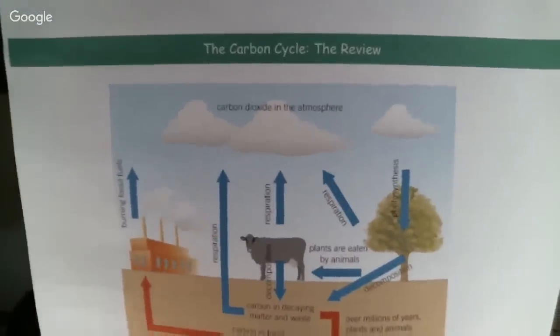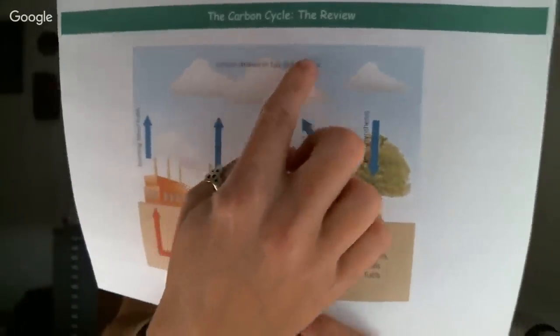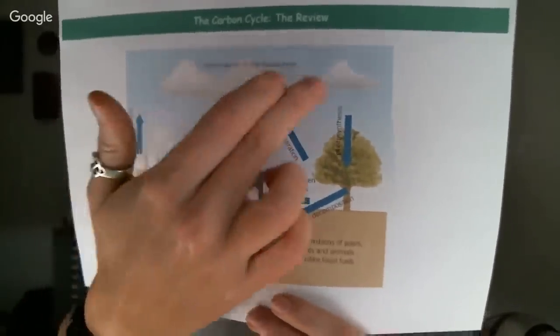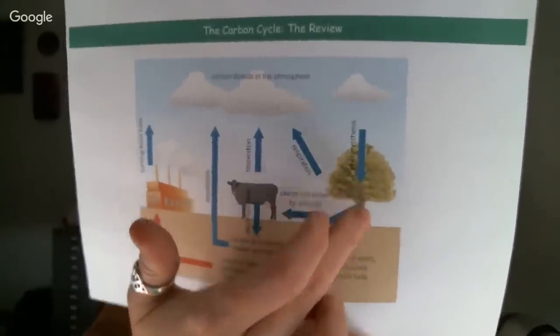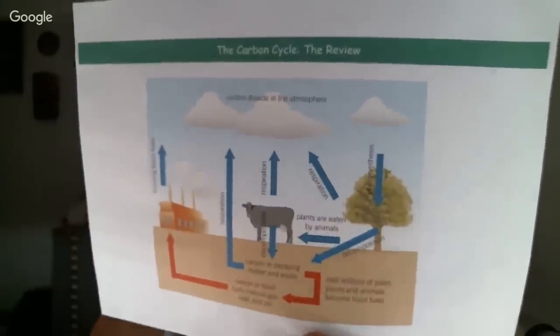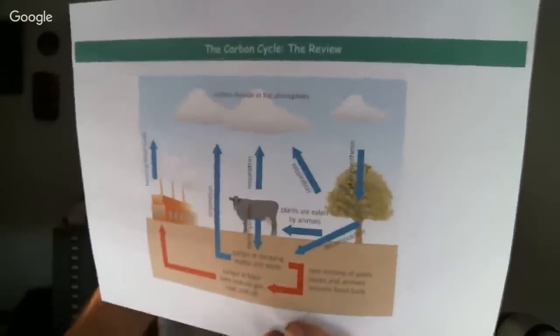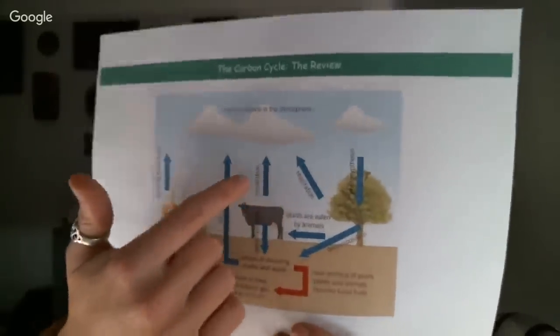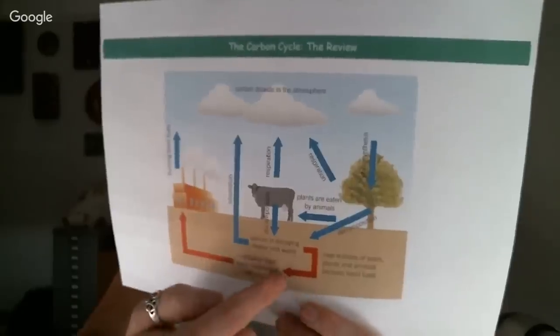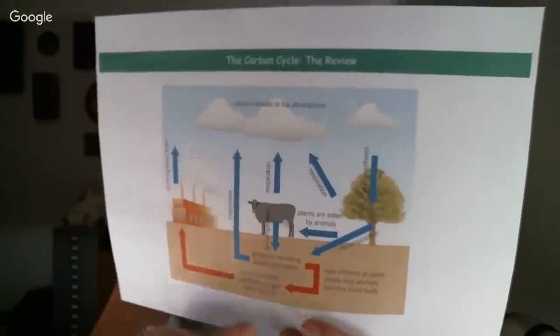Third and final cycle: the carbon cycle. This one has far fewer processes. We start with carbon dioxide in the atmosphere. The only way it's removed is by photosynthesis. Those carbon compounds made by plants can be passed on to animals when eaten. Both plants and animals can die, leading to decomposition. Respiration of every living thing — bacteria, animals, plants — returns carbon dioxide to the atmosphere. Things can also end up buried underground for millions of years, turning into fossil fuels, and when we burn them we release carbon dioxide back. So: carbon dioxide released by respiration, decomposition, and combustion; removed from the atmosphere by photosynthesis.